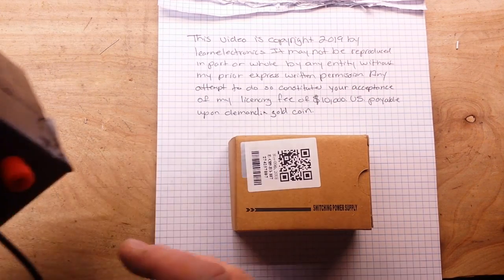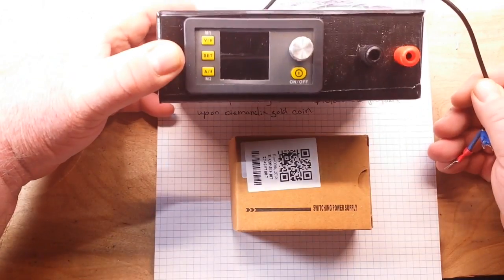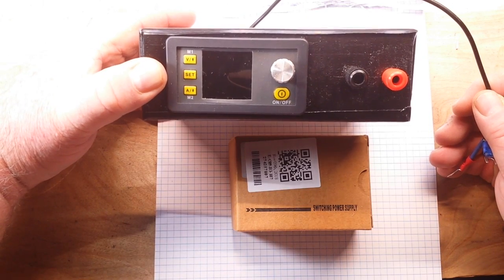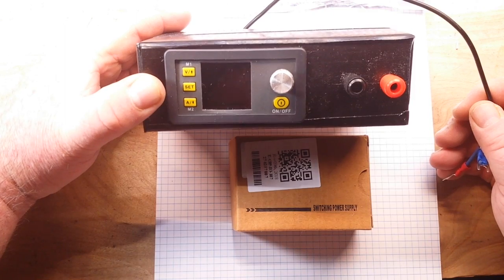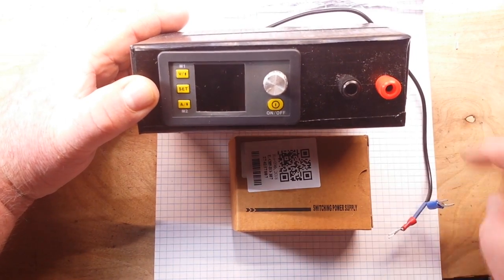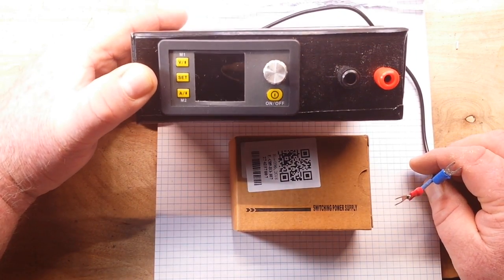The reason I wanted it is you guys have all seen this little buck converter, basically it's by Rui Dang, it's called like the UD 25 or something. Anyway, it's a buck converter but it can make a nice little bench power supply if you have a source for it.